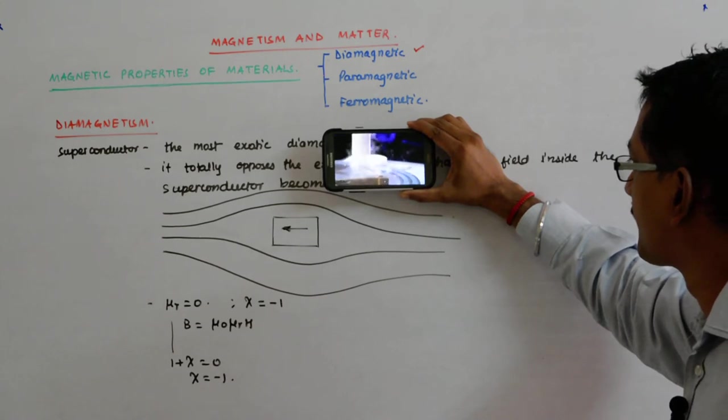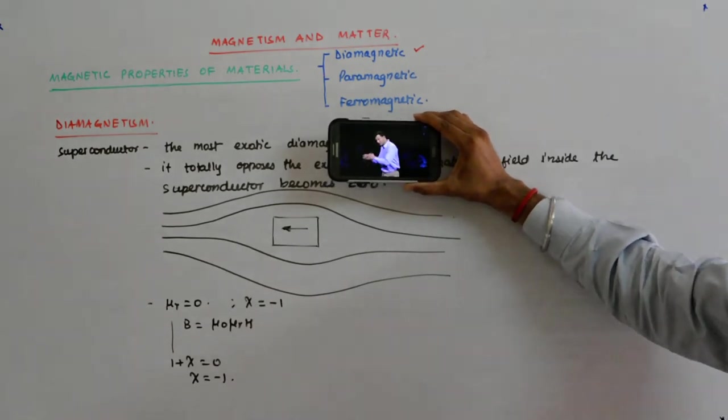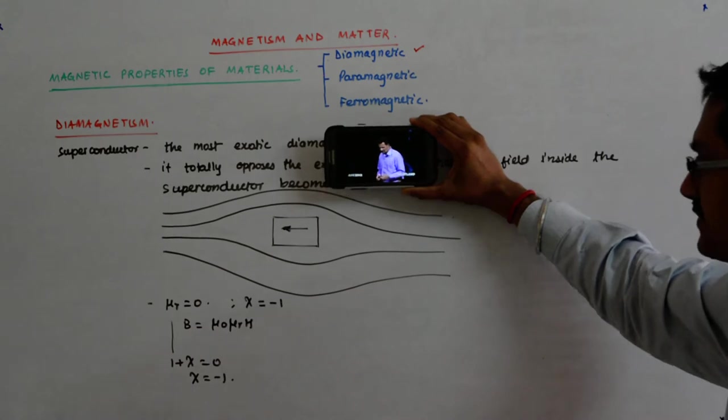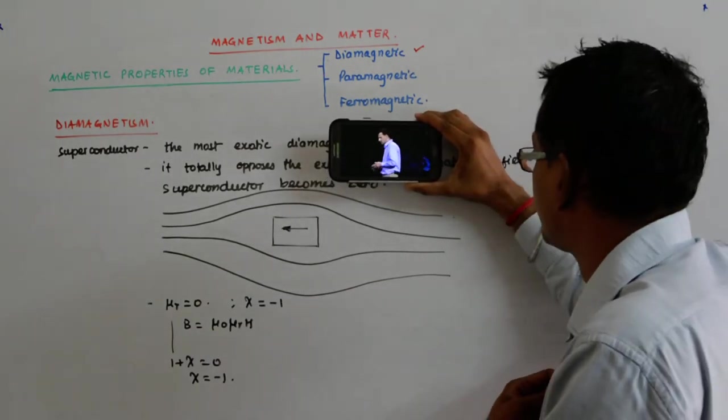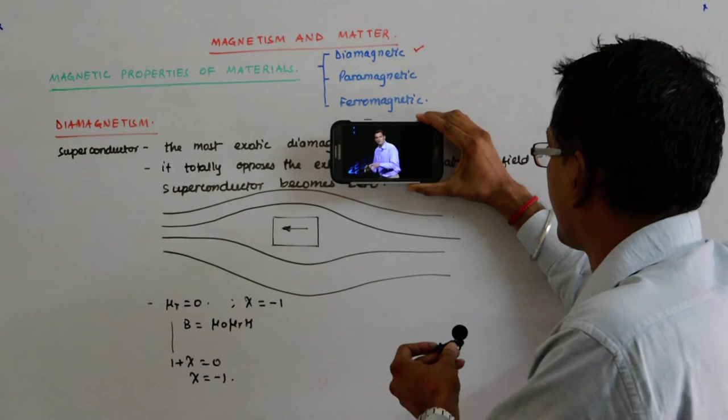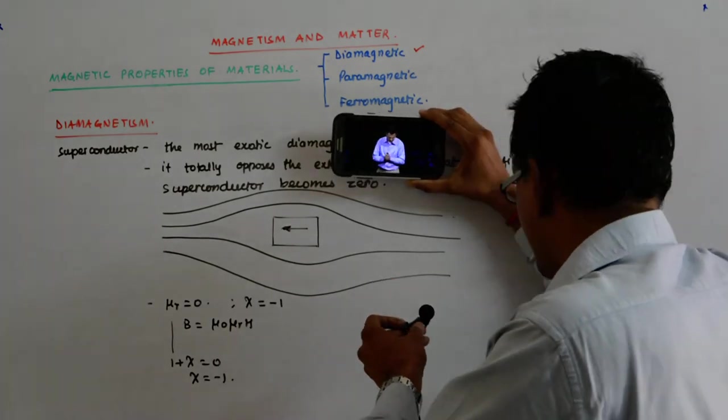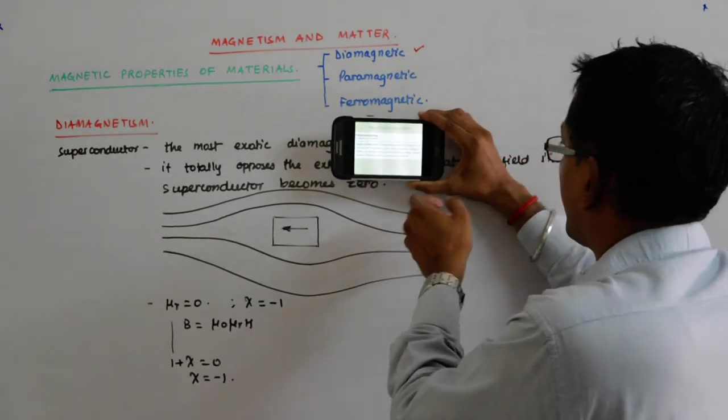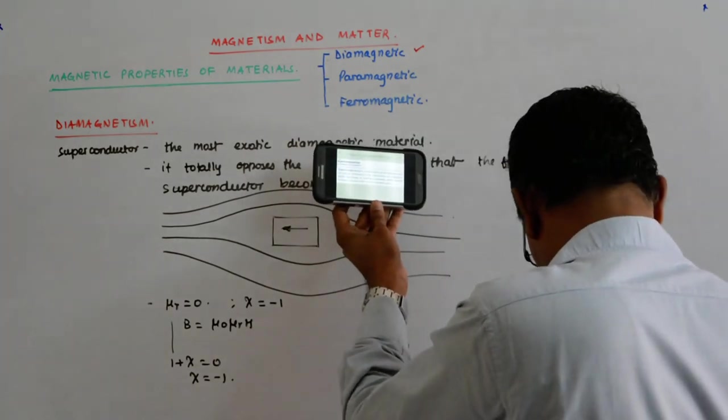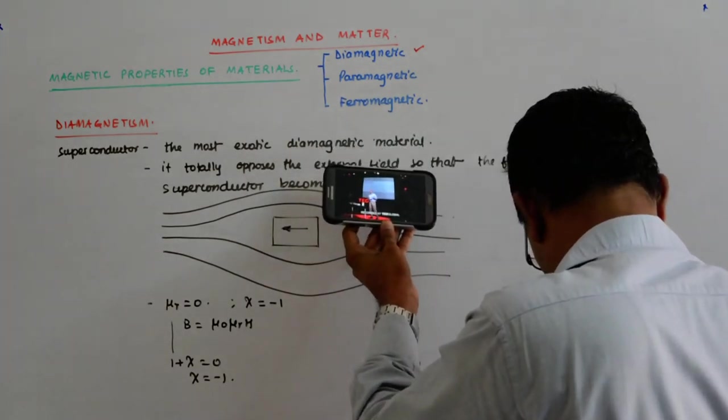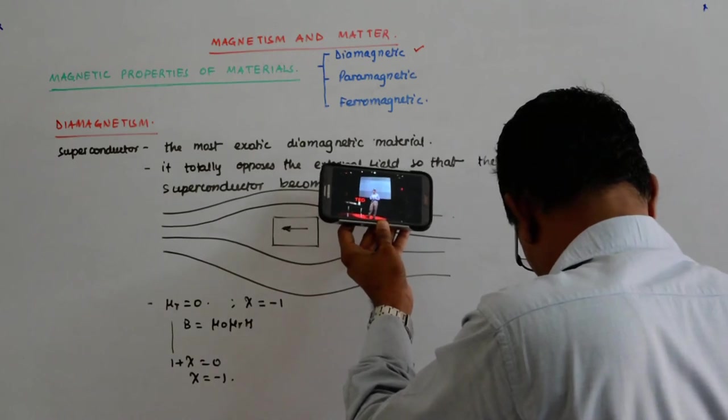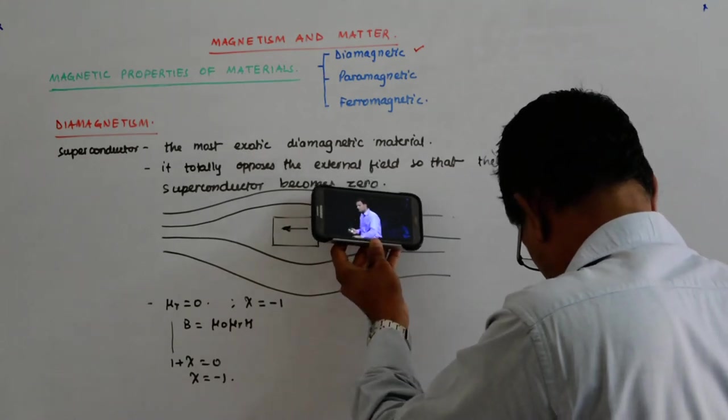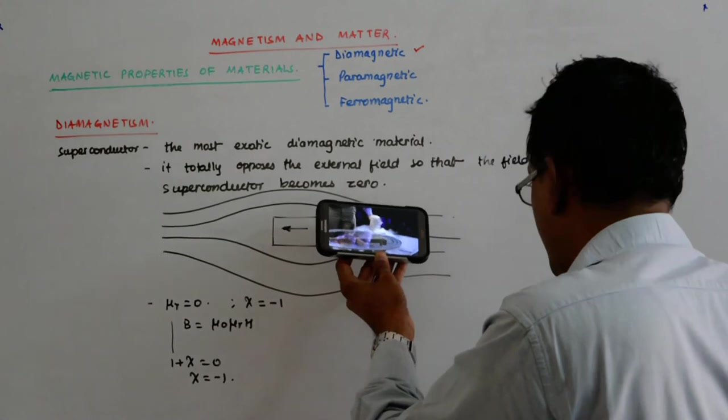This is called quantum levitation and quantum locking and the object that was levitating here is called a superconductor. Superconductivity is a quantum state of matter and it occurs only below a certain critical temperature. Now it's quite an old phenomenon, it was discovered 100 years ago. However only recently, due to several technological advancements, we are now able to demonstrate to you quantum levitation and quantum locking.